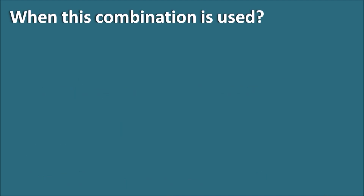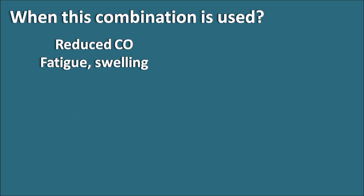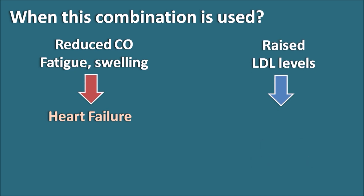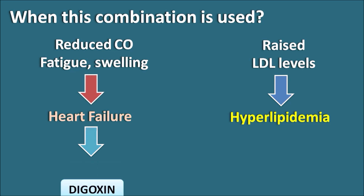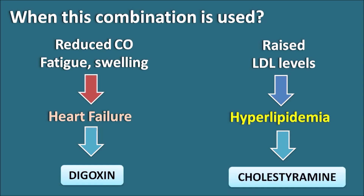Consider a clinical scenario: a patient has reduced cardiac output, fatigue, and swelling, indicating heart failure, and also has raised LDL levels, indicating hyperlipidemia. To treat heart failure, we can give digoxin to increase the force of contraction and blood supply. To control hyperlipidemia, we can give bile acid binding resins like cholestyramine. If a patient requires both digoxin and cholestyramine, there is a chance of interaction between these two drugs.